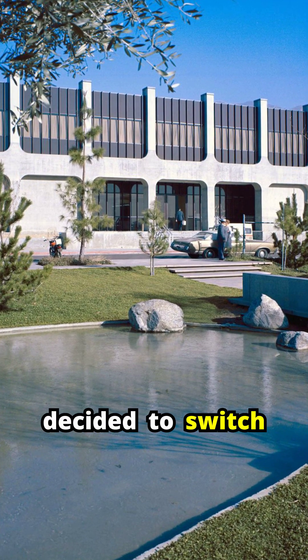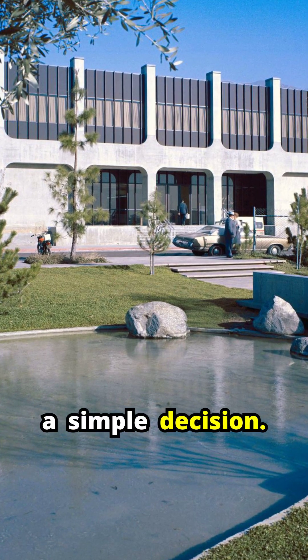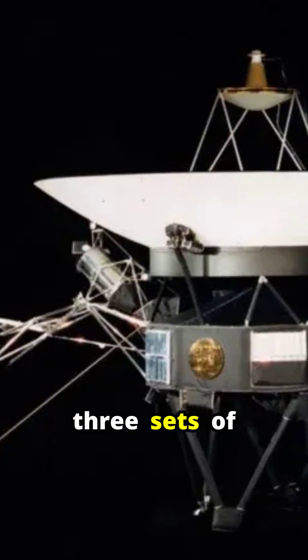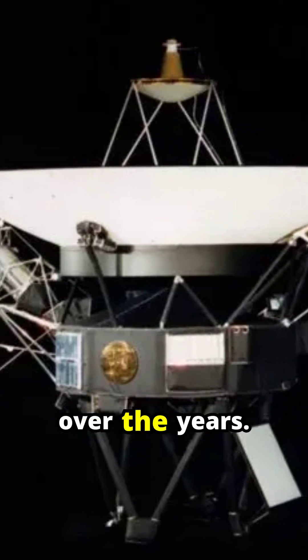Engineers at JPL decided to switch the spacecraft to a different set of thrusters, but this wasn't a simple decision. Originally equipped with three sets of thrusters, Voyager 1 has seen two branches exhibit clogging issues over the years.